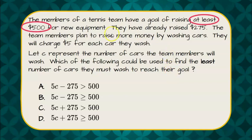So we know that we need to do at least $500, so that means we need greater than or equal to $500, because at least $500 or more. We can rule out choice A and choice B because those are just greater than $500, but we can have $500.